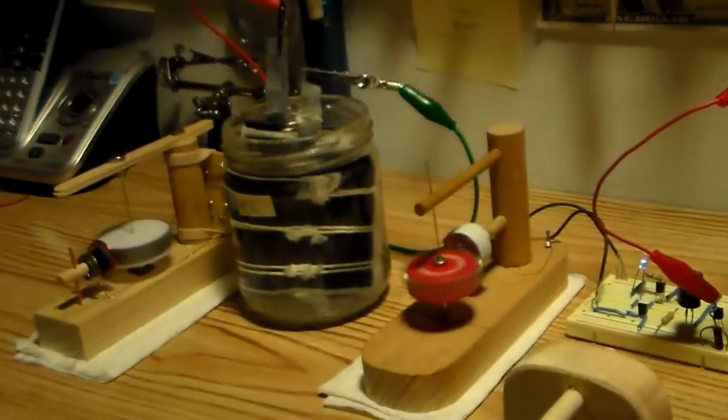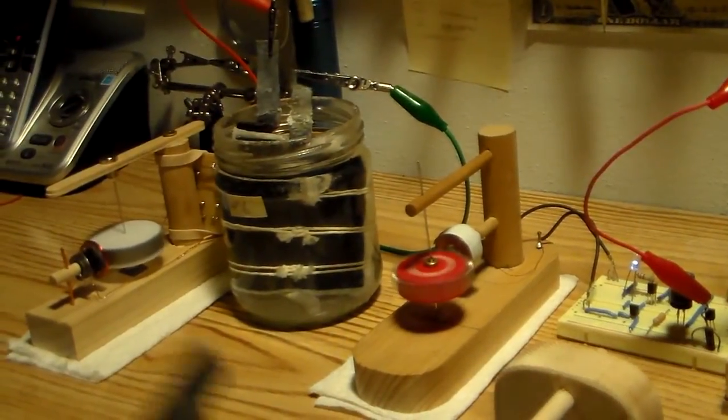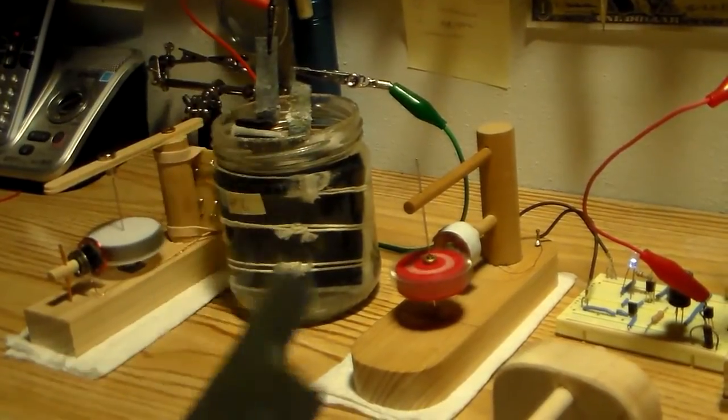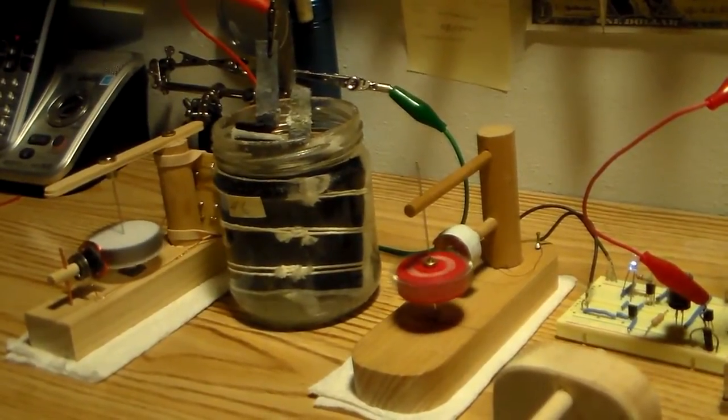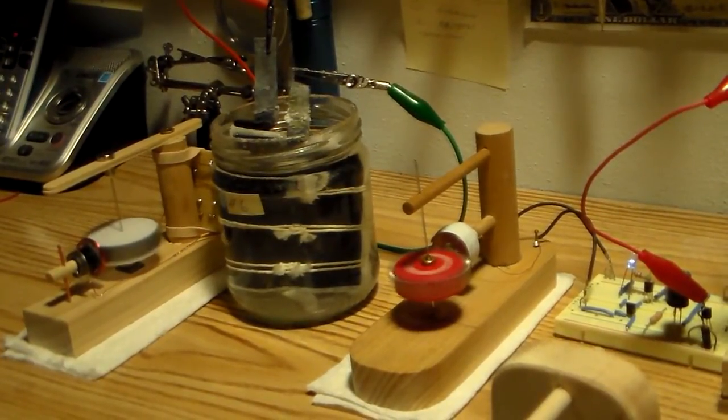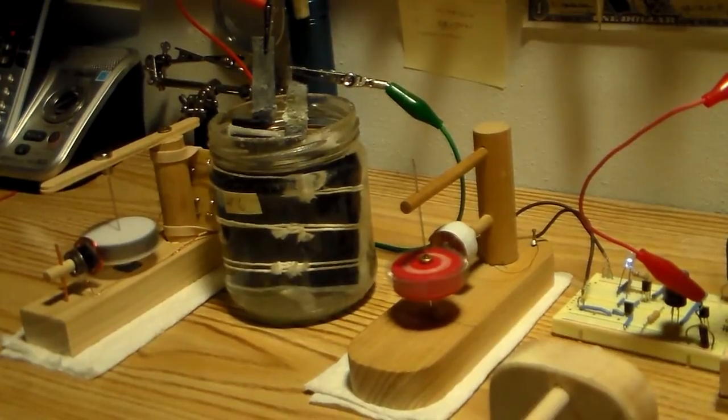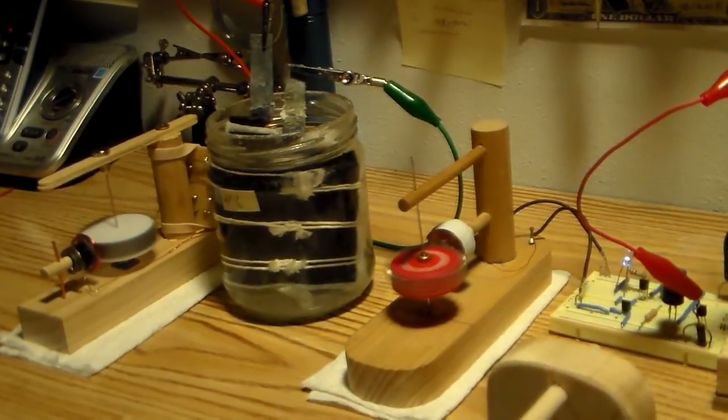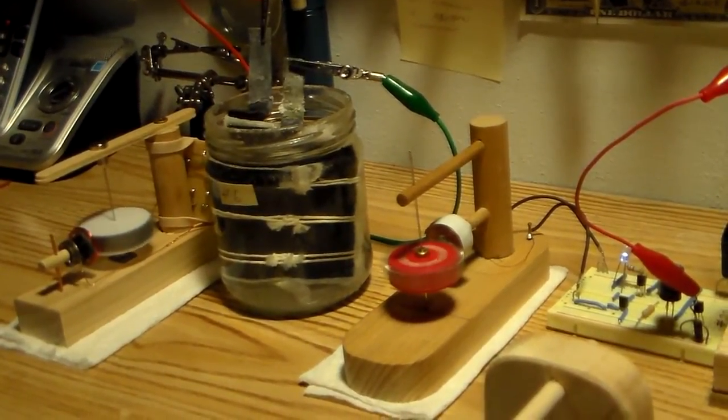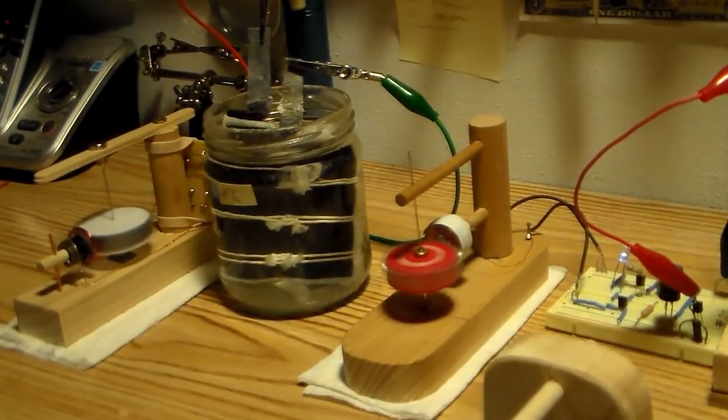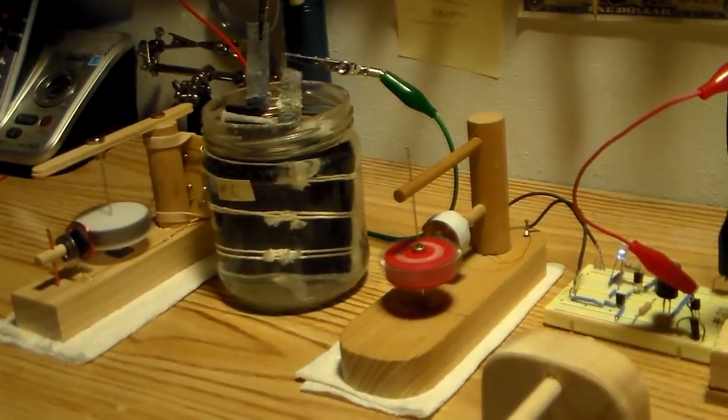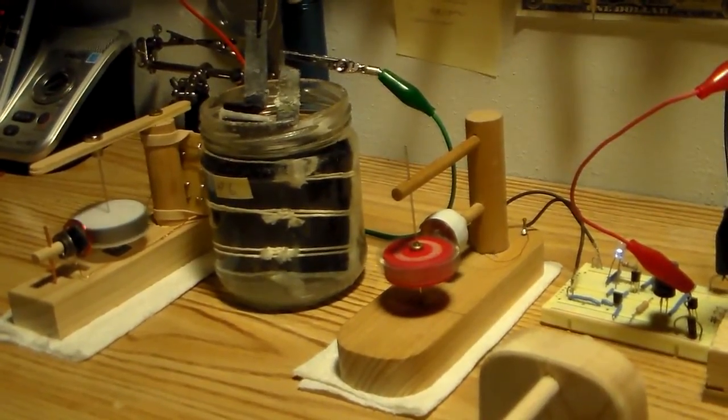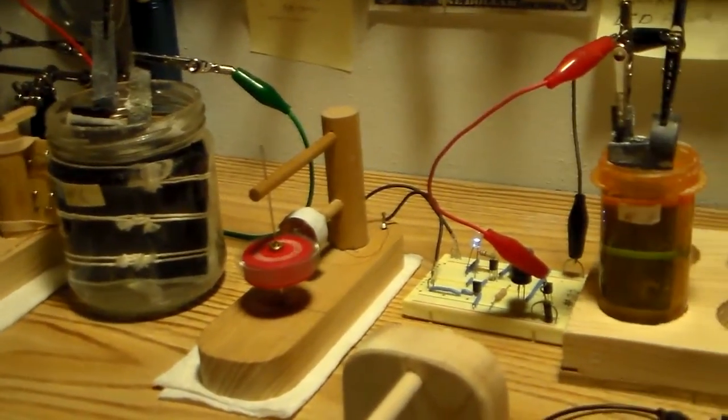And this one over here, this is exactly the same as these, except they're three inch square sheets. And it's, again, one sheet wrapped in paper towel. I think it's probably about two paper towels wrapped around that thing. And then a sheet on either side of it. And I'm using the outside sheets as a negative terminal and the center sheet as a positive terminal.